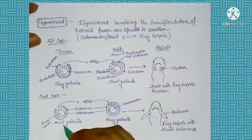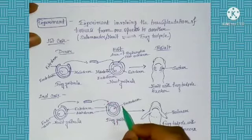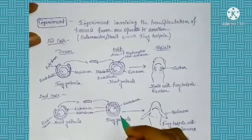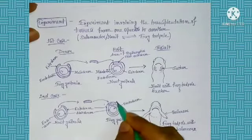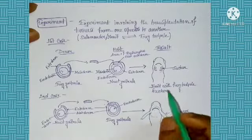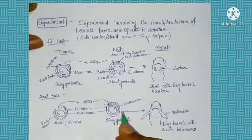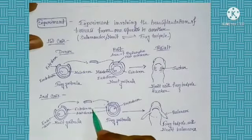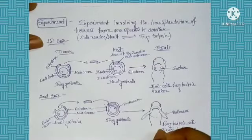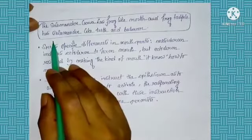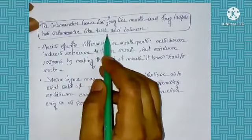In the second case, a small part of the ectodermal region of the newt gastrula is isolated, and this isolated ectoderm is then transplanted into the ectodermal region of the frog gastrula from where the future frog mouth is developed. We then see that this frog gastrula forms a frog tadpole with a balancer, and this balancer is related to the salamander. As the transplanted ectodermal region of the newt is responsible for the formation of the balancer, the balancer is formed in the mouth region of the frog tadpole.